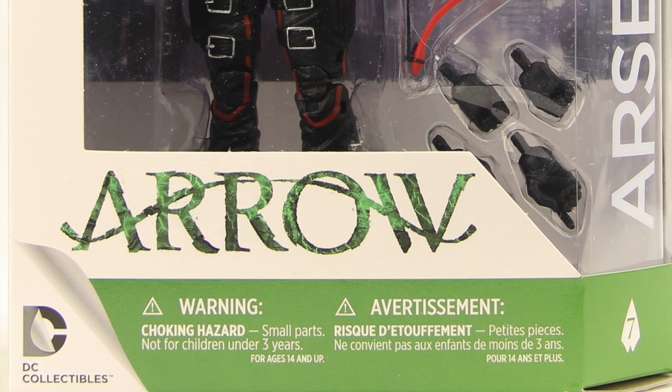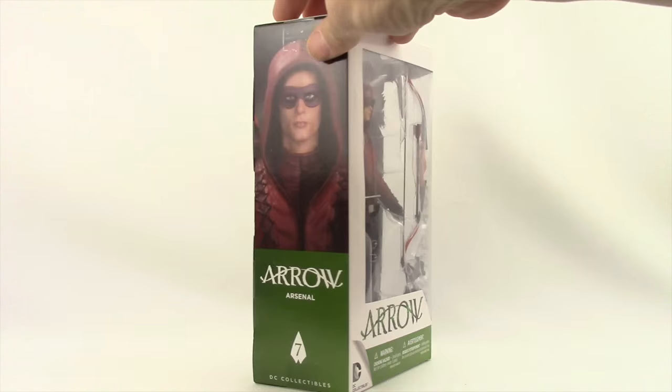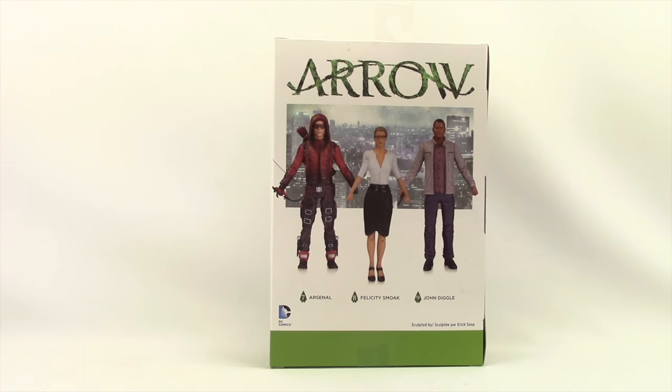Now this figure comes packaged in the same style of packaging we've seen with the other Arrow figures. You've got the white and green borders, the figure clearly displayed in the window box packaging along with the accessories. Off to the side you have the name of the character, it tells us this is figure number 7 in the series. On the side we have a look at the figure.